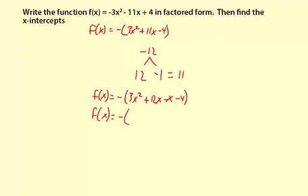Now for the first two terms, there's a 3x in common, so I'll take that out. Then x + 4 is left over. And then for the next two terms, there's nothing really in common.